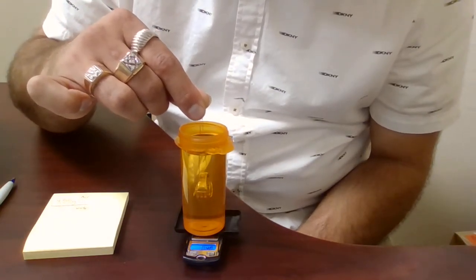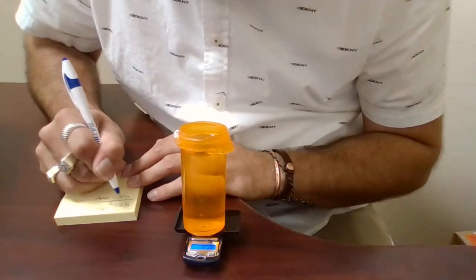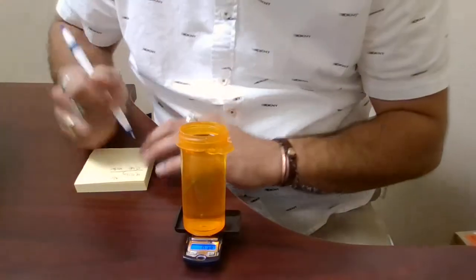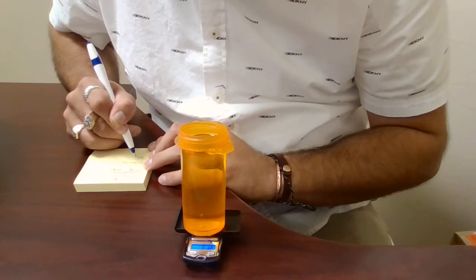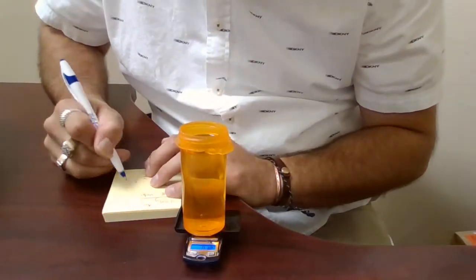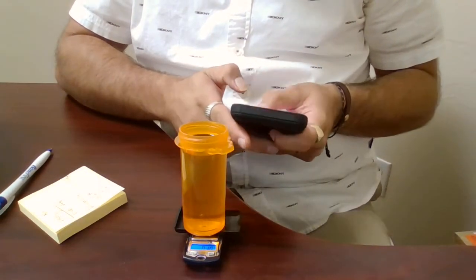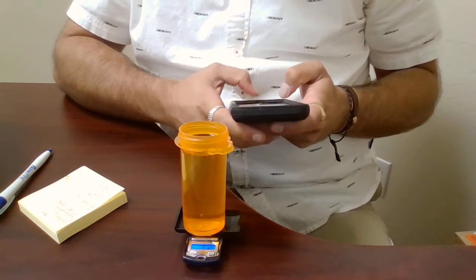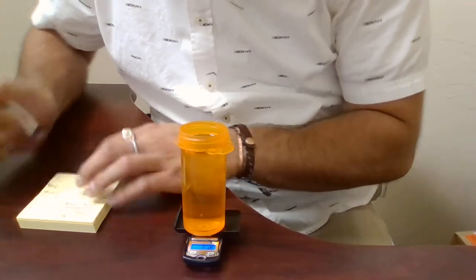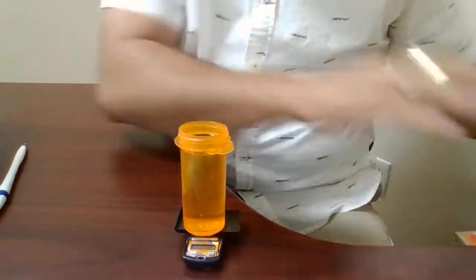The weight in water reads 0.4 grams on the scale. The weight in air is 4.55 grams and the weight submerged in water is 0.4 grams. The formula is weight in air over weight in water, which equals specific gravity or density. Calculating: 4.55 divided by 0.40 gives a density of 11.375 grams per cubic centimeter, which is expected for a 10 carat yellow gold alloy.